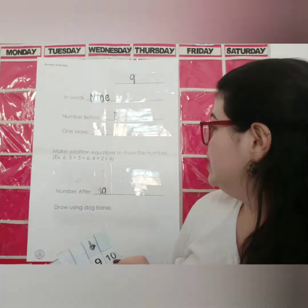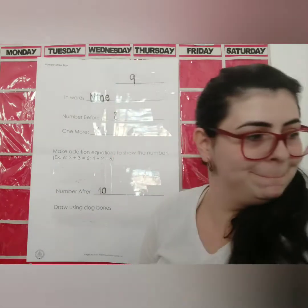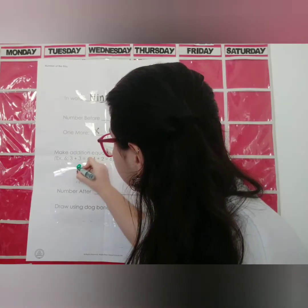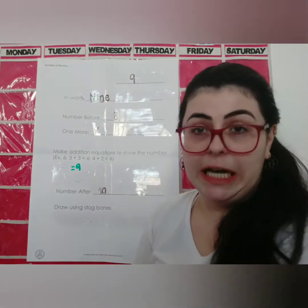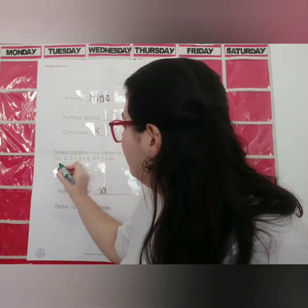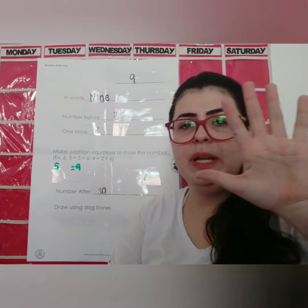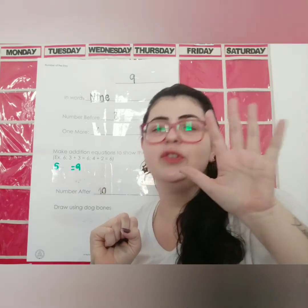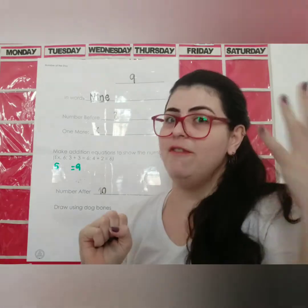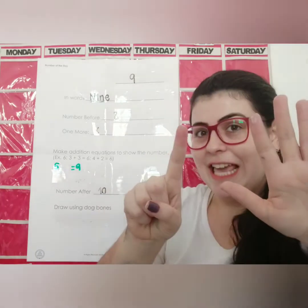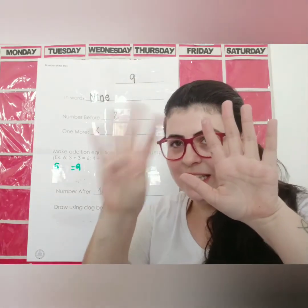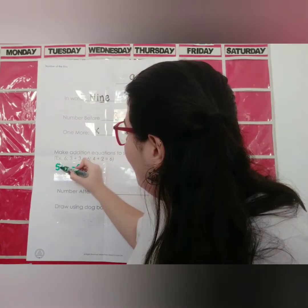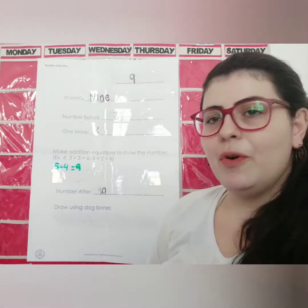Make additional equations to show the number. What number do we need to get to 9? For example, if I have 5 here, 5 plus 1 number is 9. You don't need to count from 1 — you can say 5, 6, 7, 8, 9. So, 5 plus 4 equals 9.